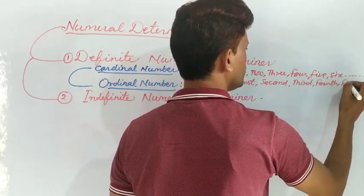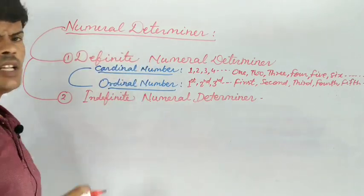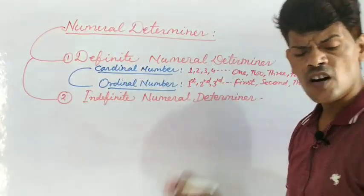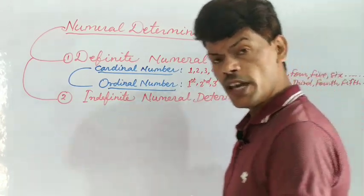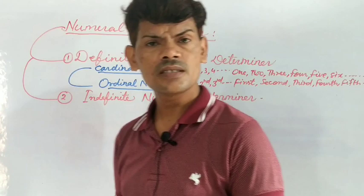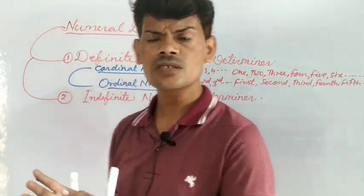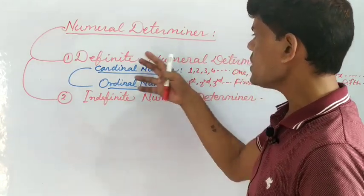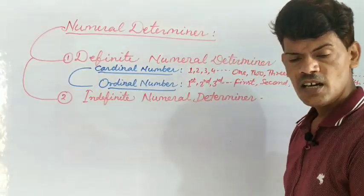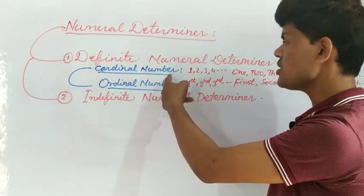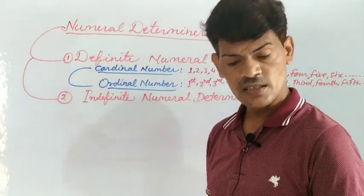Definite numeral determiner examples: I have 3 daughters, I have 50 students in my class, I have 5 chairs, I have 3 pens, I have 3 books. For ordinal numbers: this is your 2nd lesson — ordinal number. The 1st president of our country was Dr. Rajendra Prasad — 1st, 2nd, 3rd, 5th.